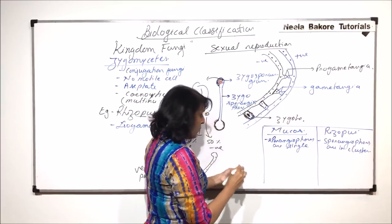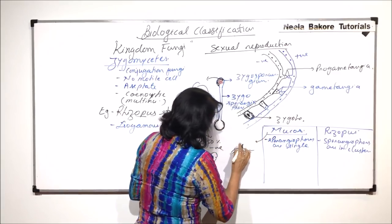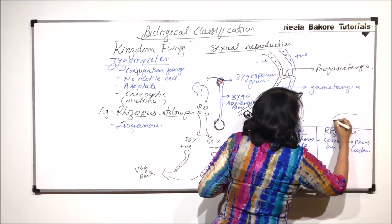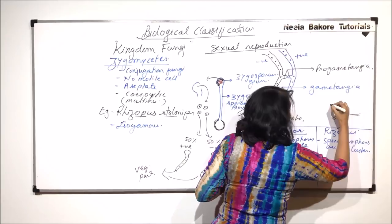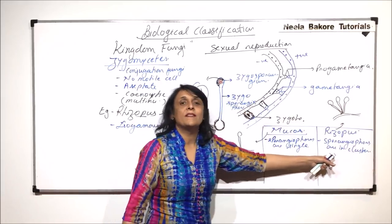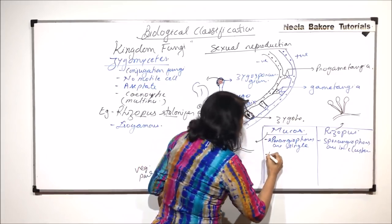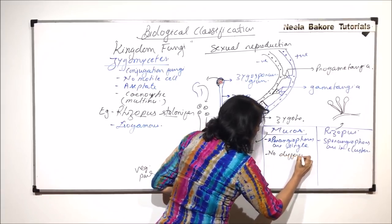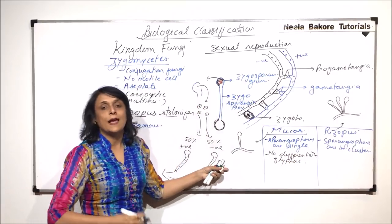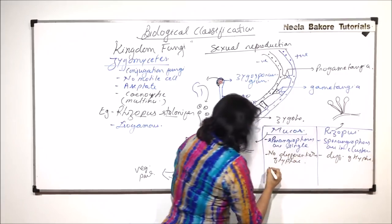What does this mean? Suppose, if we draw a Mucor. So how would it look? This is the stoloniferous hypha or this is the hypha and here is a sporangiophore and a sporangium. Whereas, in case of Rhizopus, we would find one sporangiophore and its sporangium. Sporangiophore and its sporangium. So it is going to appear in cluster where it is going to be always single. Second difference is, in case of Mucor, there is no differentiation of hyphae. That means, we would not find stoloniferous rhizoidal etc. Whereas here, there is differentiation of hyphae.